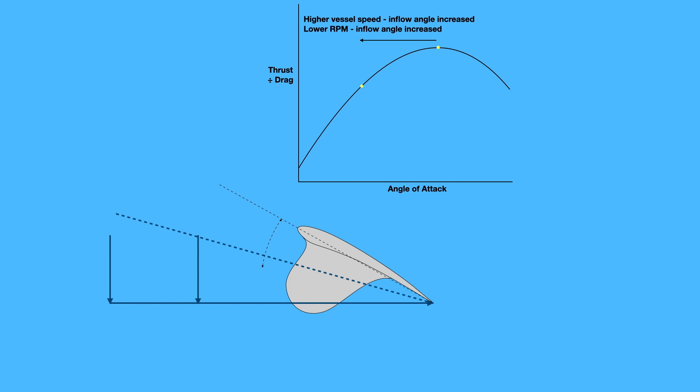It doesn't take a rocket scientist to see that if we do the opposite of these things, then we'll get an increase in angle of attack. The problem here is that that will have exactly the same effect. An increase in angle of attack caused by lower vessel speed or a higher engine RPM just results in another decrease in the thrust drag ratio, so our propeller becomes less efficient.